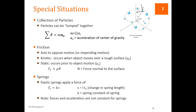A couple of special situations: usually we have a solid object made up of many particles, not a single particle. If we lump these particles together to create a solid body, we still use sum of forces equals mass times acceleration — but the acceleration is that of the center of gravity. The mass M is just the sum of all the little particle masses, i.e., the total mass of the body.